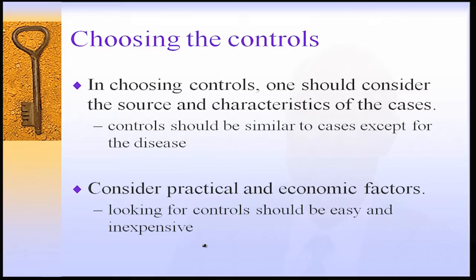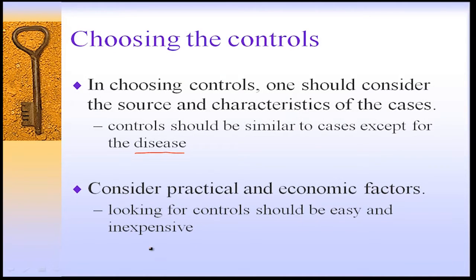In choosing controls, one should consider the source and characteristics of the cases. Controls should be as similar as possible to the cases, except for the disease of interest. You should also consider practical and economic factors — looking for controls should be easy and inexpensive, and you should not have to go very far to choose them.